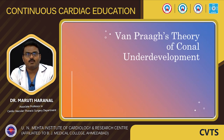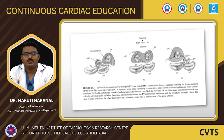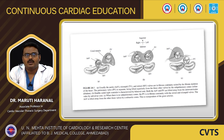In Van Praagh's theory of conal underdevelopment: during normal development of the heart we have two conus — the subaortic and the subpulmonary. As development progresses, the subaortic conus is resolved, thus committing the aorta to the left ventricle, and the subpulmonary conus continues as the infundibulum in the normal heart. In cases of double outlet right ventricle, this process is abnormal.